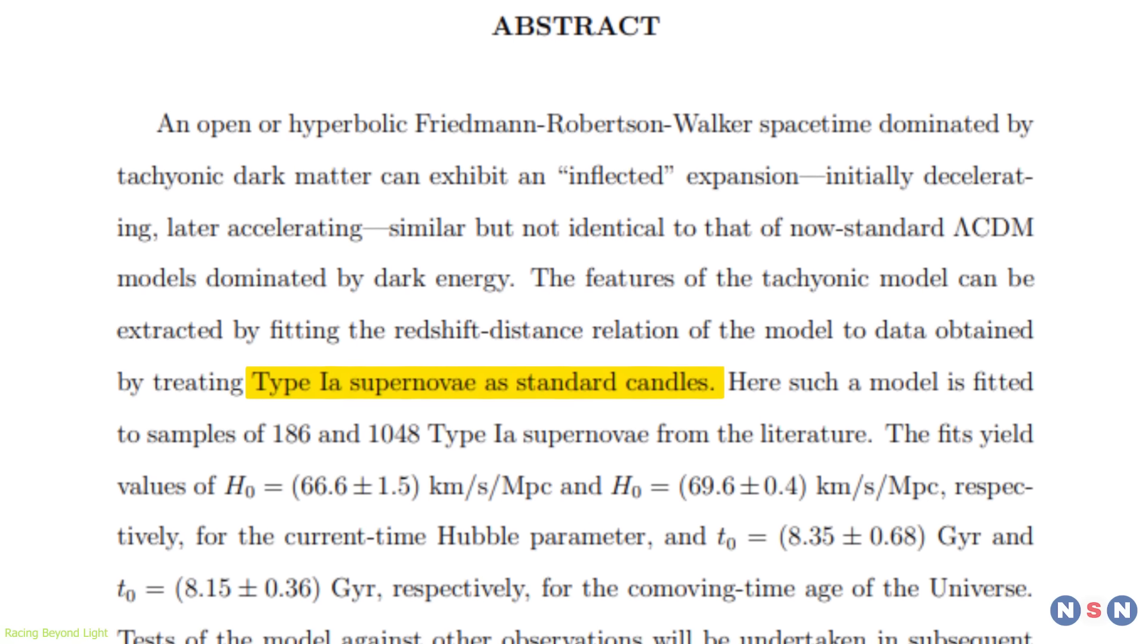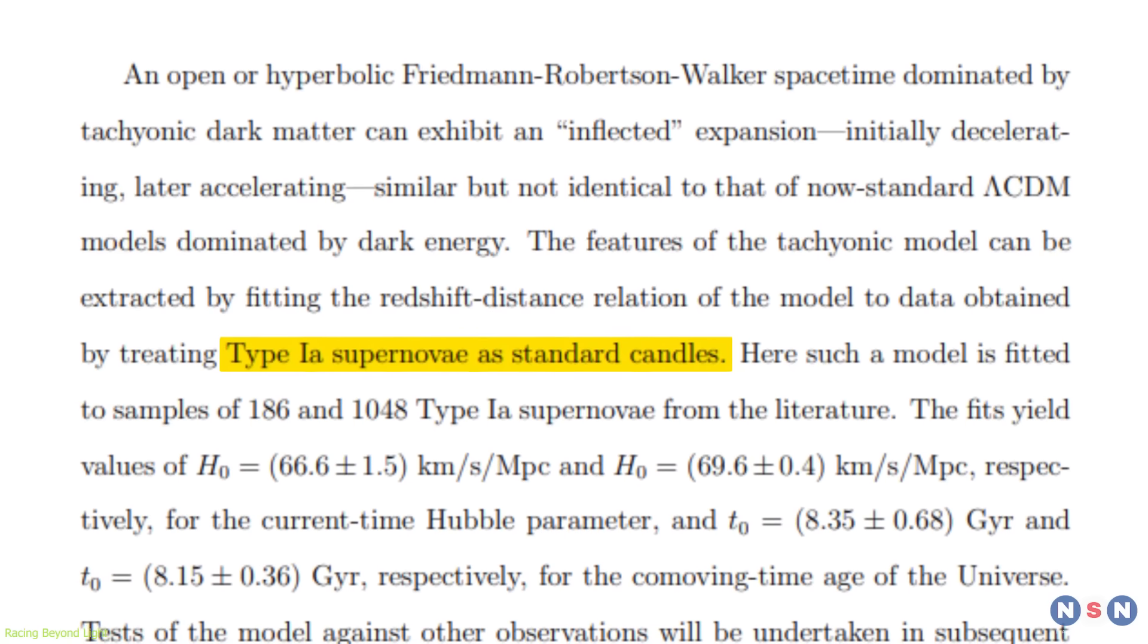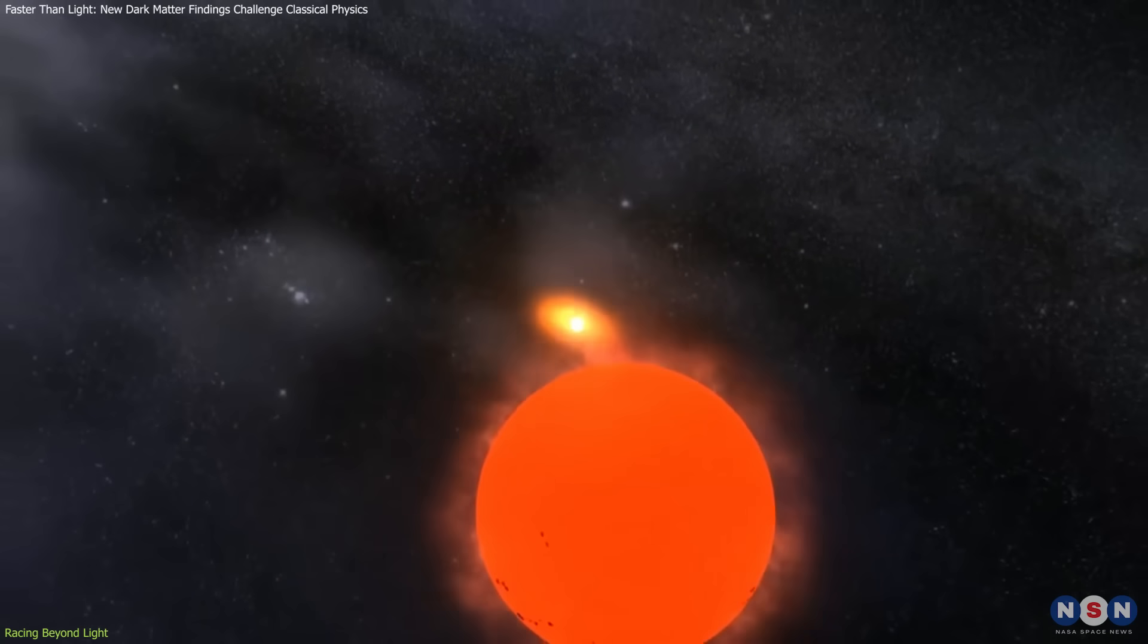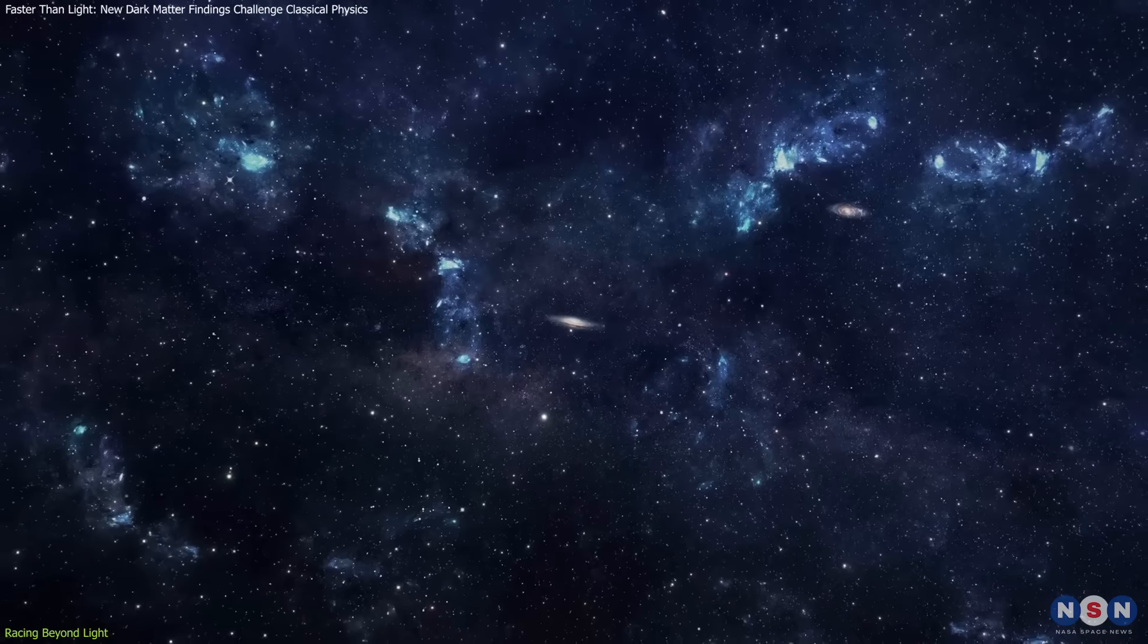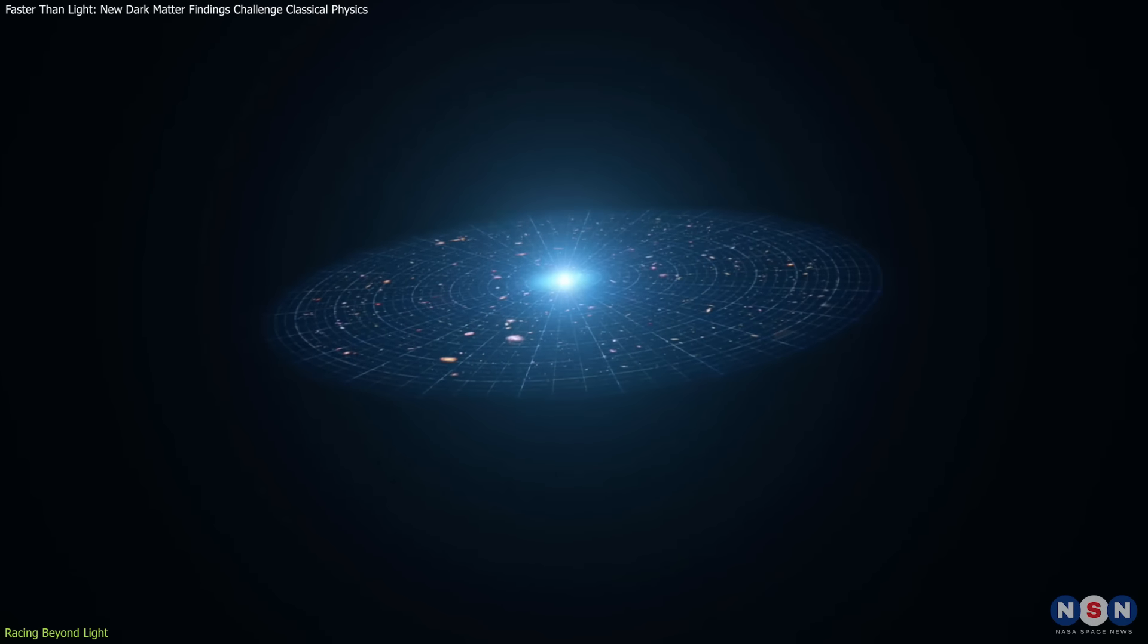To test their theory, Kramer and Redmount turned to Type Ia supernovae, known as the standard candles of the universe, due to their consistent luminosity. By measuring the light from these supernovae, scientists can calculate distances across space and track the expansion rate of the universe.